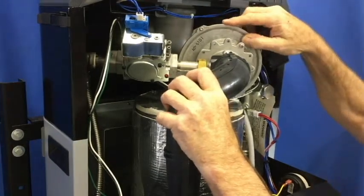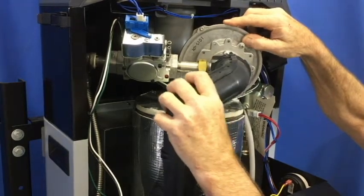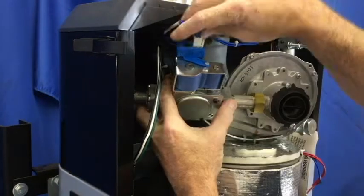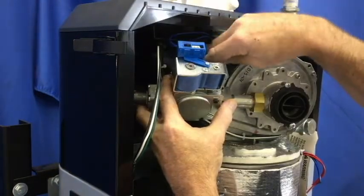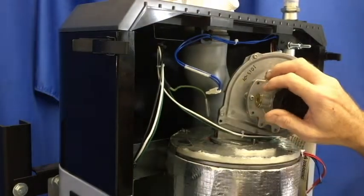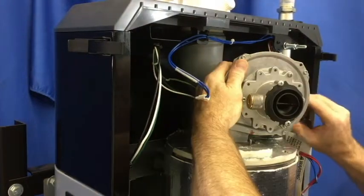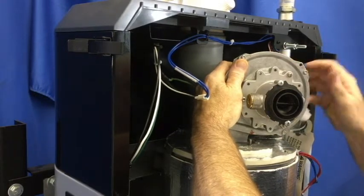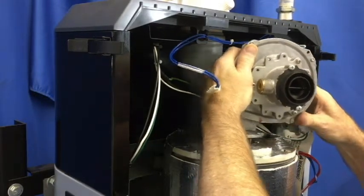Remove the air silencer, gas valve and flexible gas line. Disconnect the wire harness to the gas valve and blower. Disconnect the gas valve from the Venturi. Remove the blower Venturi assembly.